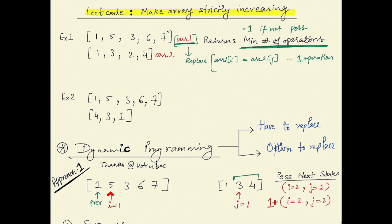In the first example, all numbers are already in increasing order, so if we replace 5 with 2, the complete array becomes increasing and hence the answer is 1.